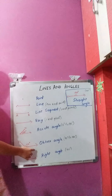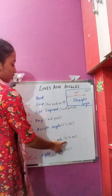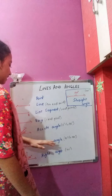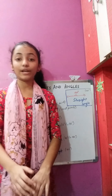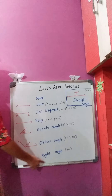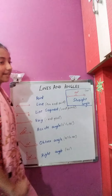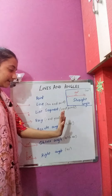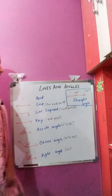Coming to obtuse angle — an obtuse angle measures 91 degrees to 180 degrees. Here also, 91 to 180 degrees but not 180 degrees. Now this is a right angle. A right angle measures exactly 90 degrees, so an acute angle does not measure 90 degrees, but a right angle does.